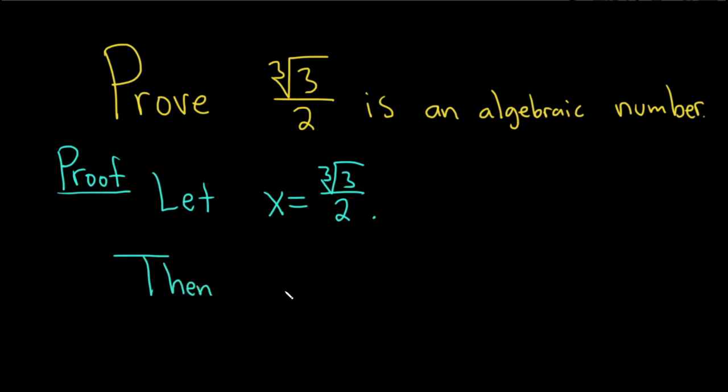So then x cubed is equal to, and now we're going to go ahead and cube this, 3 over 2 and then cube it.